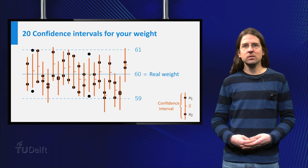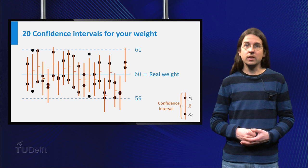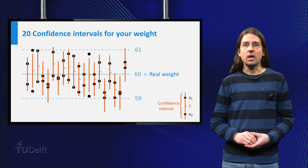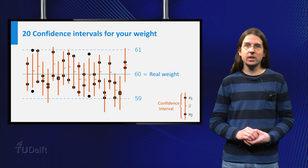Let's get back to the interpretation of the confidence interval. Notice that the interval you construct is random. Every time you weigh yourself twice and construct a 95% confidence interval, you will obtain a different interval.